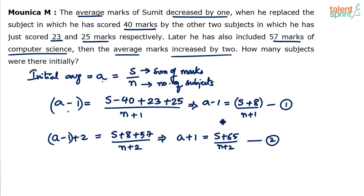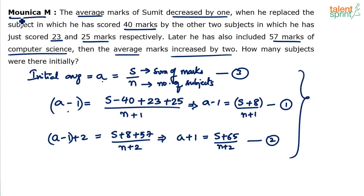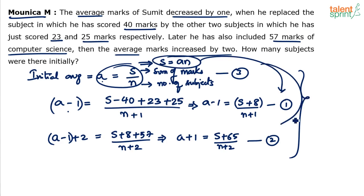We have three equations and three variables. A equals S by N is the third equation. From that, S equals A times N. We substitute S equals AN into the first and second equations. From equation 1, multiplying both sides: A minus 1 into N plus 1 equals S plus 8. From equation 2: A plus 1 into N plus 2 equals S plus 65.